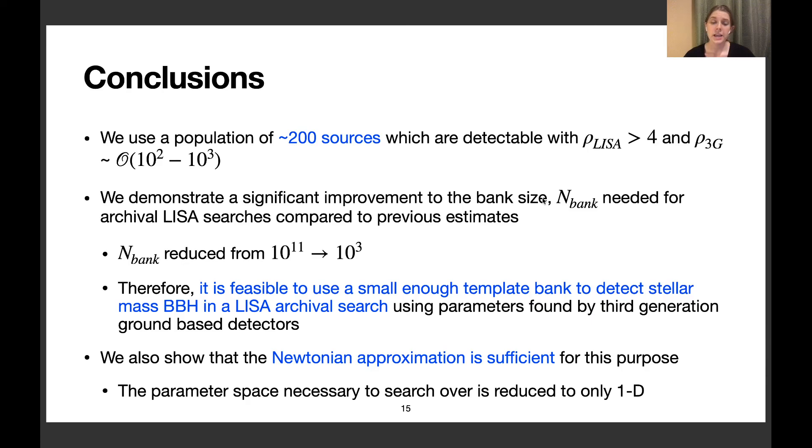This shows it would be feasible to use a small enough template bank to detect stellar mass binary black holes in a LISA archival search using parameters found by third-generation ground-based detectors. We also show the Newtonian approximation is sufficient for this purpose, reducing the parameter space necessary to search over down to only one dimension.